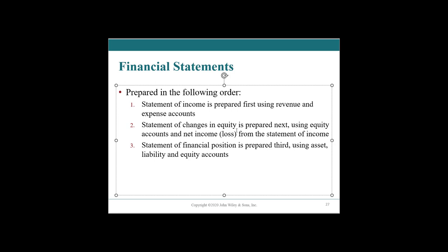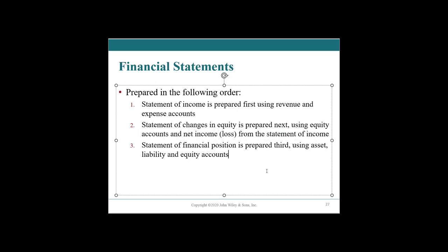In the statement of changes in equity, we go from our opening retained earnings plus net income, or minus net loss, minus dividends, giving us our ending retained earnings. Then we add our common shares and preferred shares if we have any. That statement of changes in equity rolls up into our balance sheet, or statement of financial position, along with our ending asset and liability balances. The statement of cash flows is typically done after all of this.